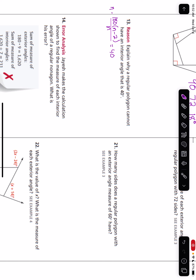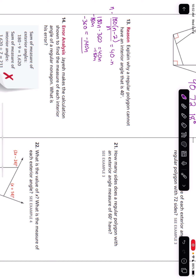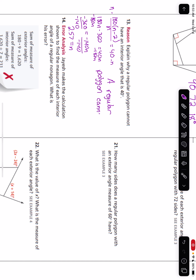The first thing I'm going to do is multiply both sides by n, giving us 180n, and I'll also do the distributive property: 180n minus 360 equals 40n. Subtract 180n from each side, so we get negative 360 equals negative 140n. Divide both sides by negative 140, and we find that 2.57 equals n. But since n stands for the number of sides, a regular polygon can't have 2.57 sides — it needs to have a whole number of sides. And that's why a regular polygon cannot have an interior angle that is 40 degrees.